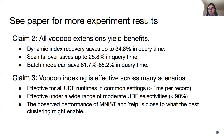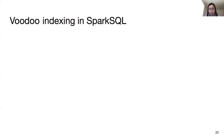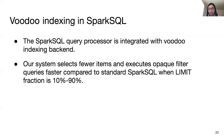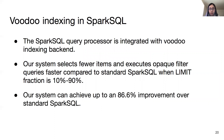In addition to the standalone system in the previous experiments, we integrate a SparkSQL query processor with a Voodoo Indexing backend. According to the experiments on Amnesty, our system selects fewer items and executes opaque filter queries faster compared to standard SparkSQL when the limit fraction is from 10% to 90%, achieving up to 86% improvement.